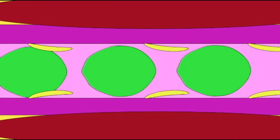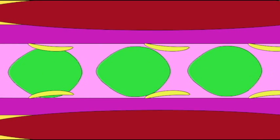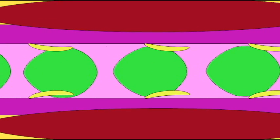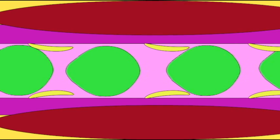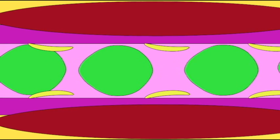Just as veins possess valves to stop blood from going in the wrong direction, lymphatic vessels have valves to prevent lymph from going in the wrong direction.